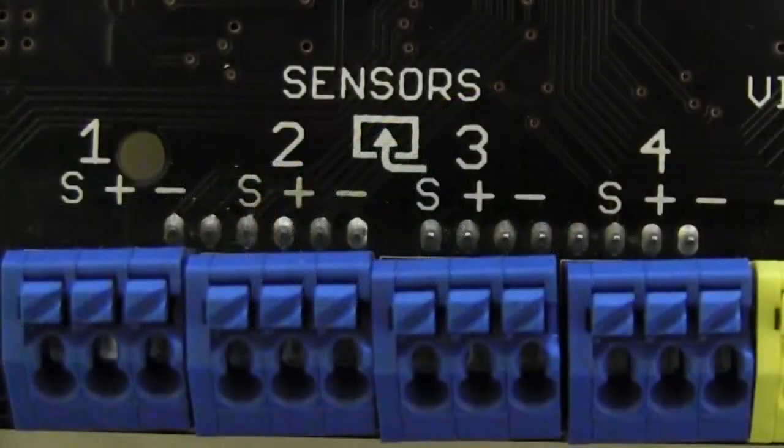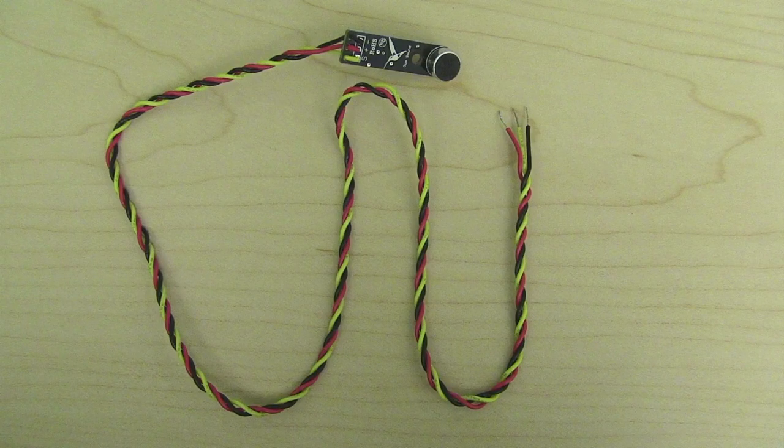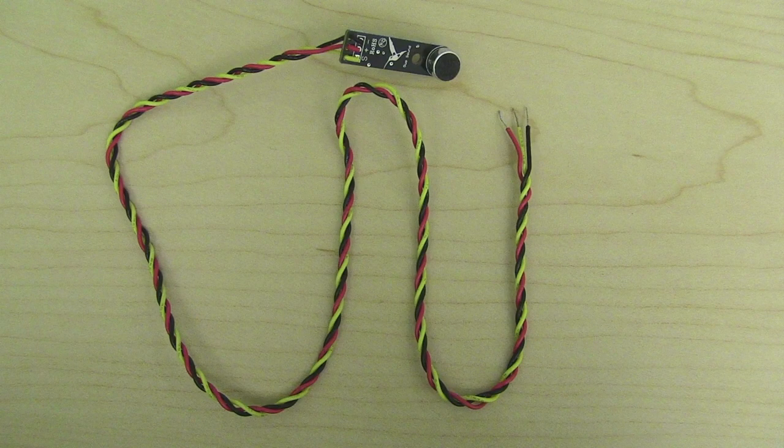And that brings us to our last section, sensors. The four sensor ports are marked in blue. All Hummingbird Duo sensors have three wires color-coded by their function.